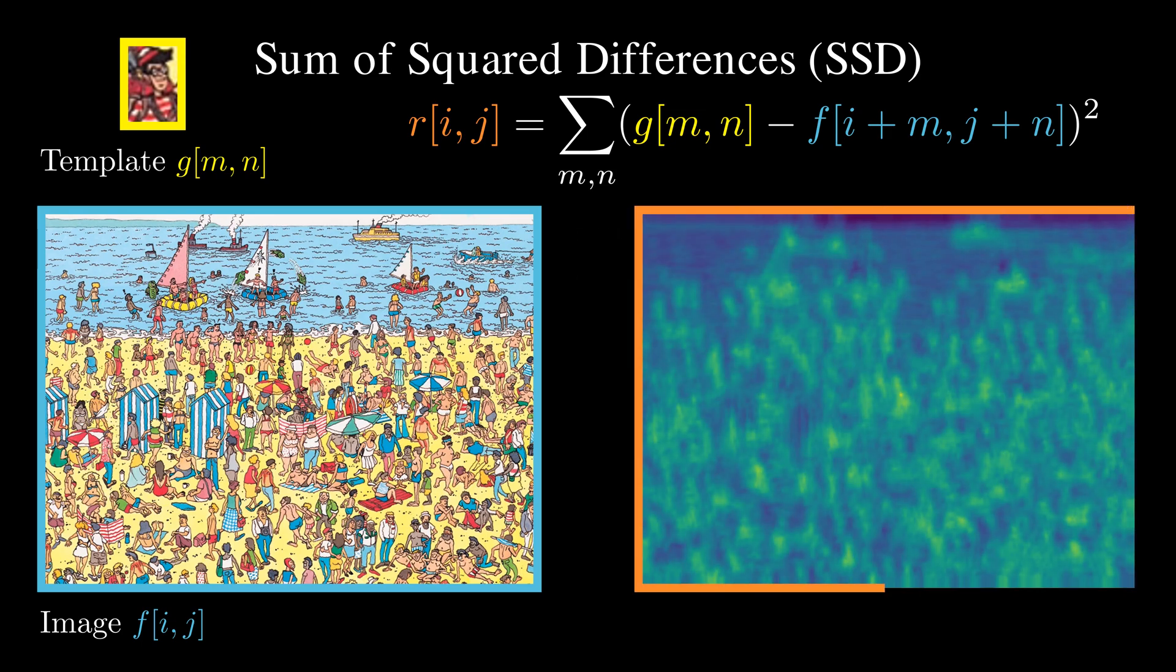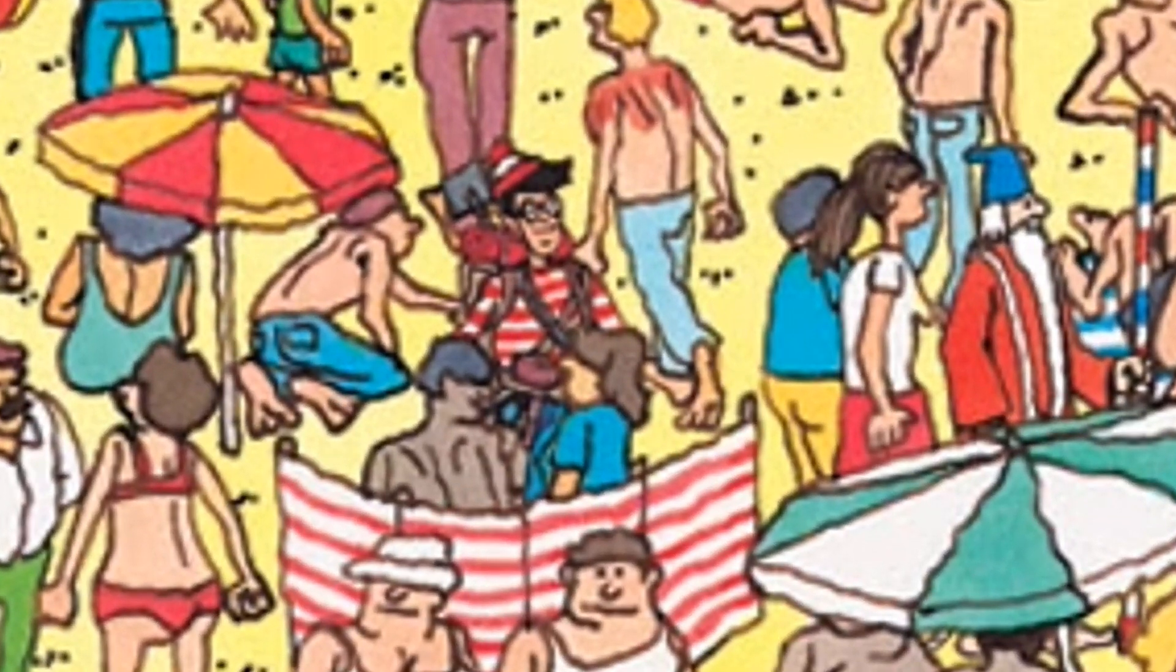Here's the response map. I visualize the negative value of the SSD so that the visualization remains consistent. We can find where Waldo is by finding the location with the maximum response.